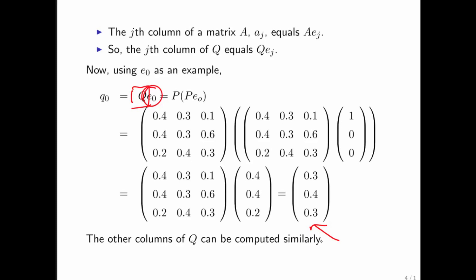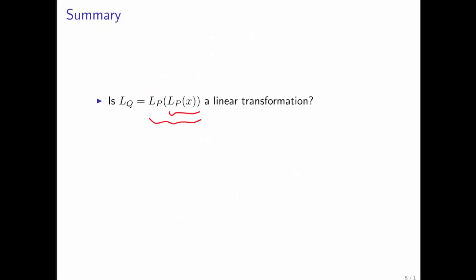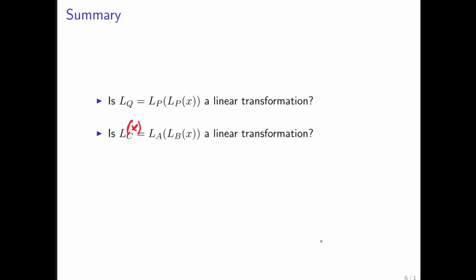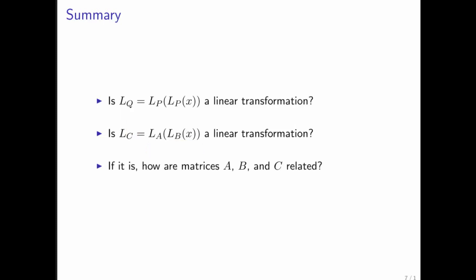In summary, this gives rise to some questions. The first question is: is L sub Q of x, defined as a composition of L sub P with itself, a linear transformation? The more general question is: if you compose an arbitrary linear transformation with another linear transformation, is that also a linear transformation? And if it is, how are matrices A, B, and C related — where A represents L sub A, B represents L sub B, and C represents the new composed linear transformation L sub C? That's what we'll be talking about for the rest of the week.